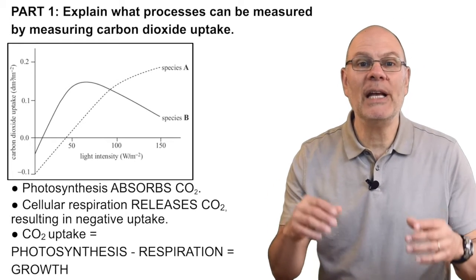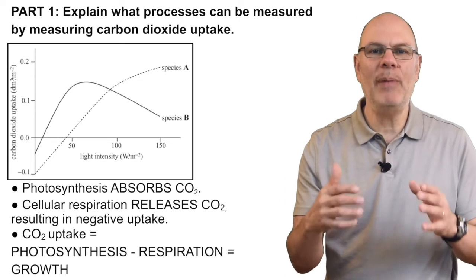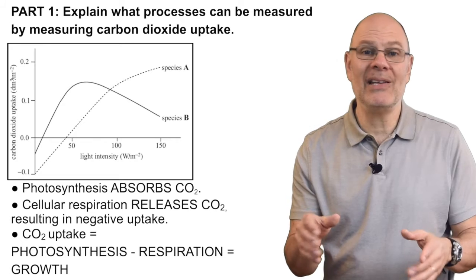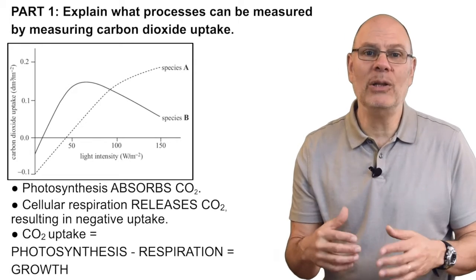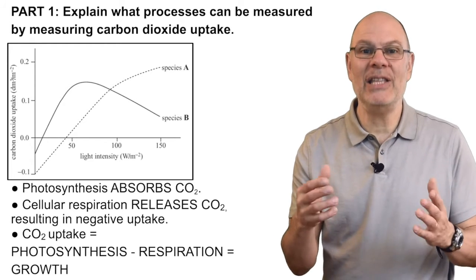On the other hand, if the plant is producing more CO2 than it's taking up, that means that respiration is outpacing photosynthesis. In that case, the plant is losing mass, just like how you or I lose mass every time we exhale as we release carbon dioxide into the air.